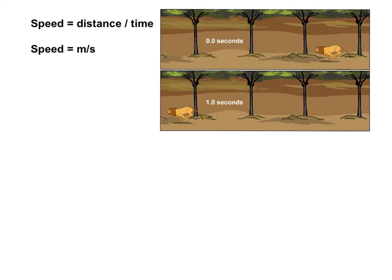What we need to do first is look at our formula. Our formula says that speed is distance divided by time, and we're going to end up with a unit known as a meter per second. So every second, how many meters is he going? That's the unit we're going to look for.